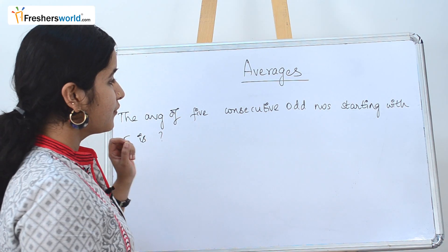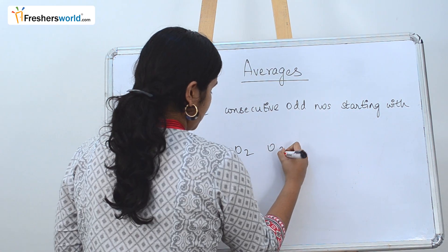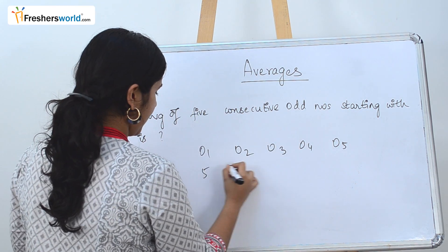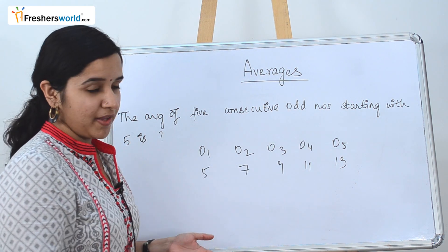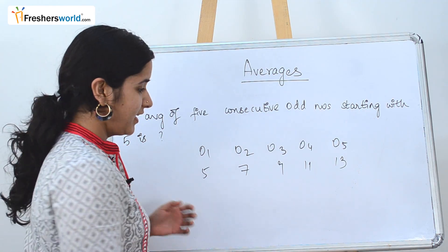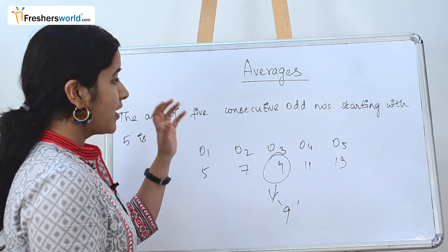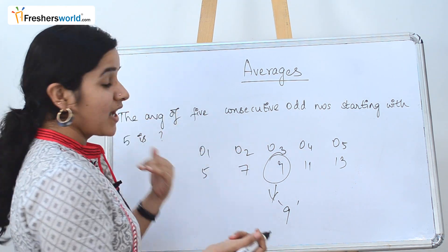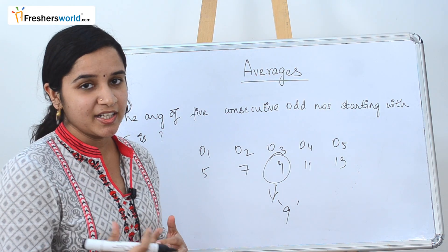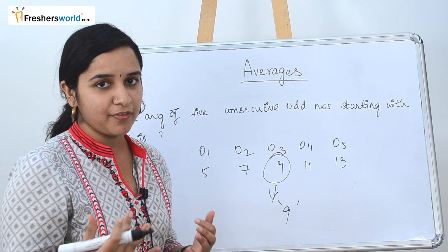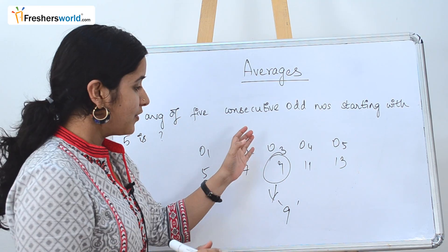The next question: find the average of 5 consecutive odd numbers starting with 5. The numbers are 5, 7, 9, 11, and 13. Instead of adding all and dividing by 5, there is a trick from our first video: for consecutive numbers, the middle number is always the average. So you can directly write it as 9. Even if they start with 91 or 93, you don't add every number — just pick the middle one.